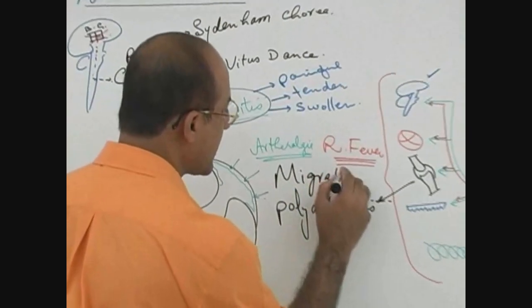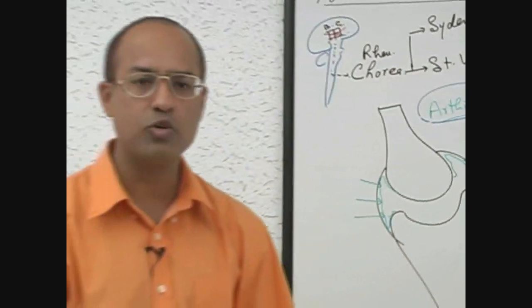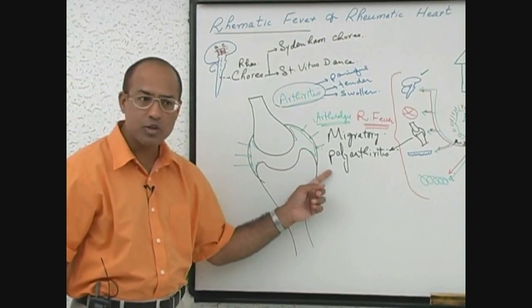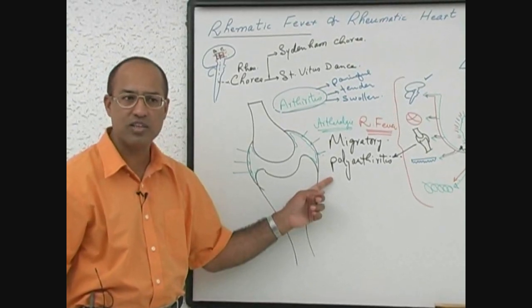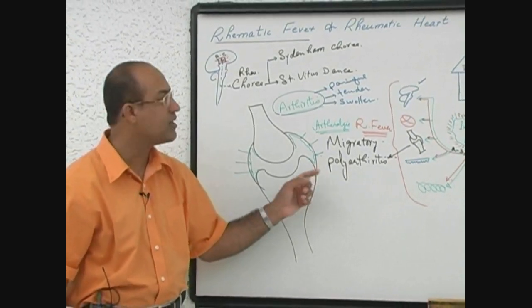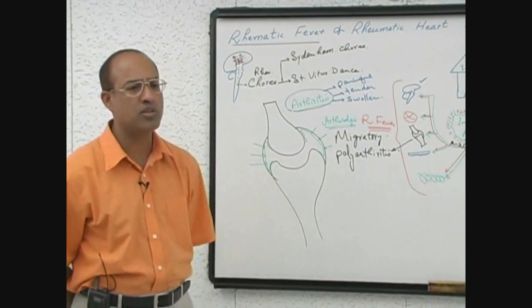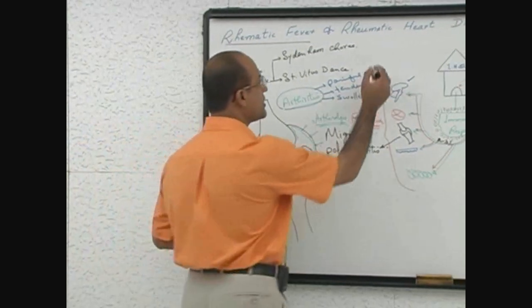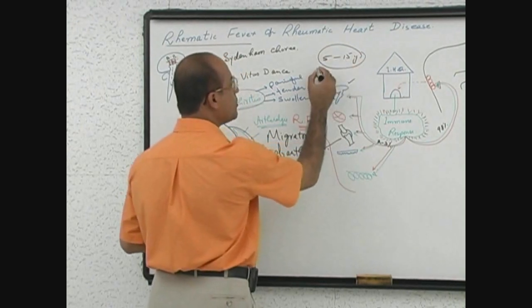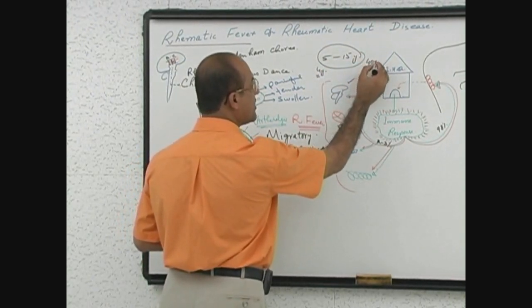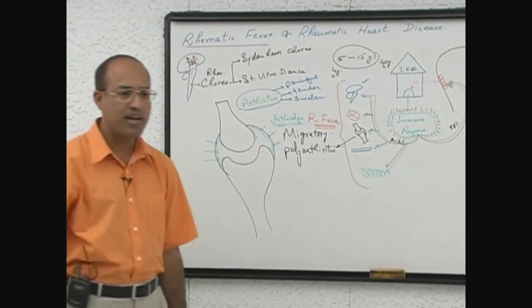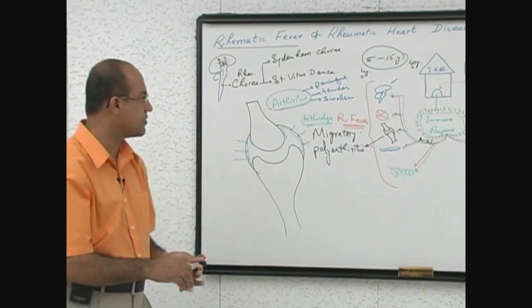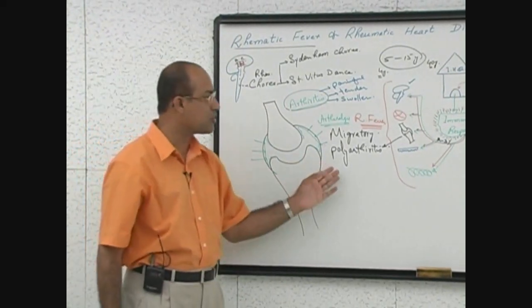To summarize: in rheumatic fever, multiple joints are inflamed — we call this polyarthritis. The inflammatory pattern changes over time as arthritis migrates from joint to joint, hence migratory polyarthritis. The first attack of rheumatic fever is most common between the ages of 5 to 15 years. The disease is rare before age 4, and a first attack is rare after age 40.